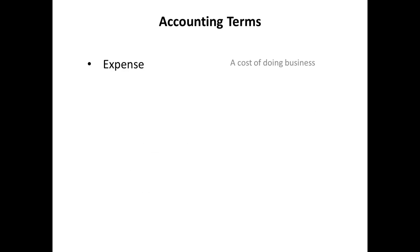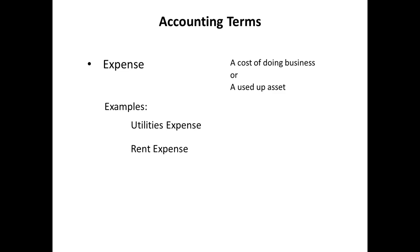An expense is a cost of doing business or a used-up asset. Costs of doing business may include utilities expense, rent expense, and wages expense. Supplies start out as assets — something a business owns. Then, as the supplies are used up, the business no longer has an asset but rather a cost of doing business: supplies expense. My neighbor can provide another example. He loaded the riding lawn mower on the trailer and drove to a gas station where he filled the lawn mower with gas. At this point, the business owns the gas, so the gas is an asset. Then my neighbor hauls the mower to a client and mows the lawn using all of the gas. The gas is no longer an asset and its cost has now become an expense — a cost of doing business.